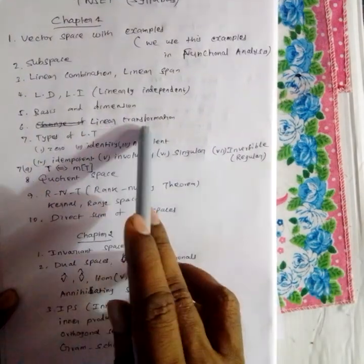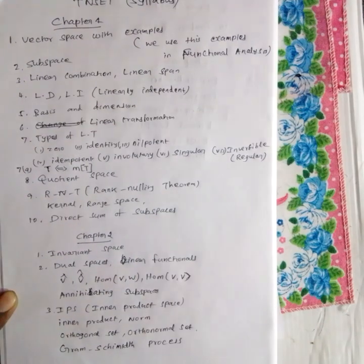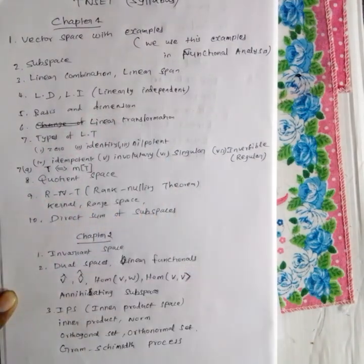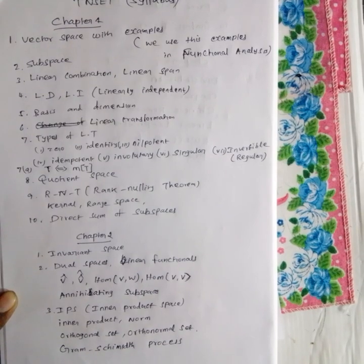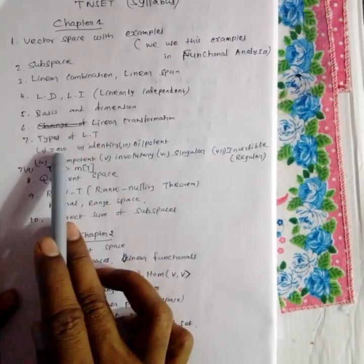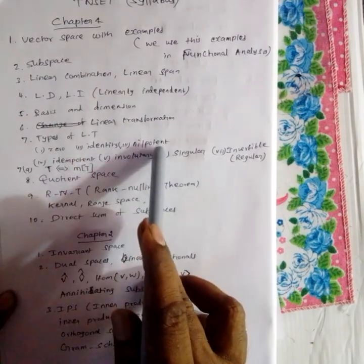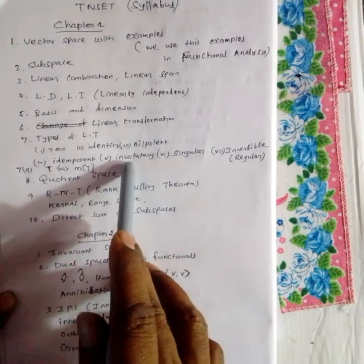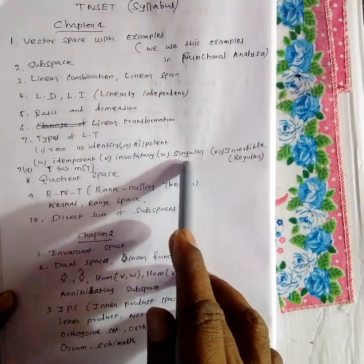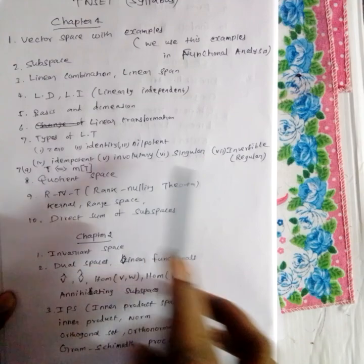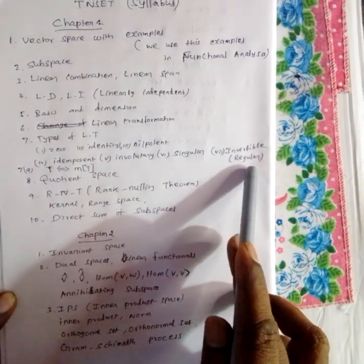Linear transformation is very important. Types of linear transformation include: zero linear transformation, identity transformation, nilpotent, idempotent. Materials are completely available. Involuntary, singular matrix, singular linear transformation, invertible linear transformation, regular linear transformation.